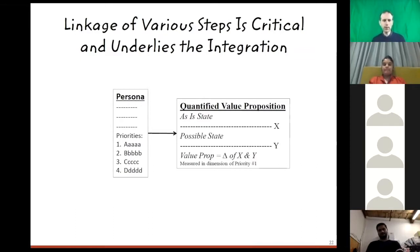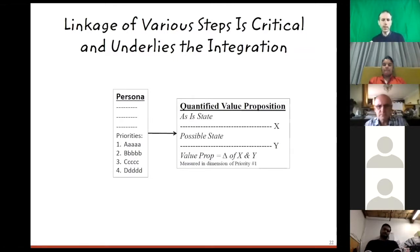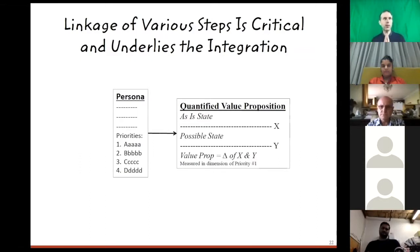In this picture, we've got the persona and multiple priorities. We want to take the top two — A and B — and show how our solution will move from the as-is state to the possible state, ideally in terms of a delta, which is the change from X to Y. So before we have X, we can say: actually, we can improve X by delta and that'll bring us to Y. We're basically measuring something in the dimension of priority number one, and then we can do the same thing for priority number two.